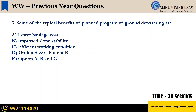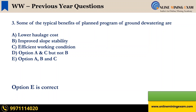Question 3: Some of the typical benefits of a planned program of ground dewatering are: A — lower haulage cost, B — improved slope stability, C — efficient working condition, D — options A and C but not B, E — all of the above (A, B, C). The correct answer is E — all of the above.